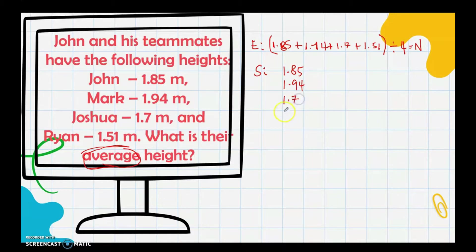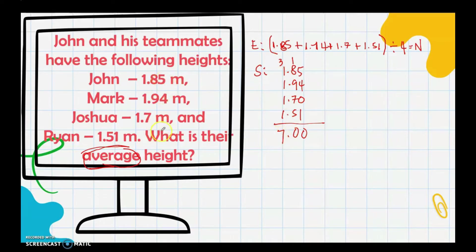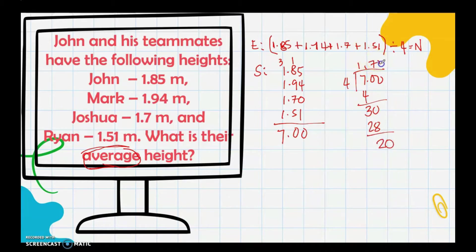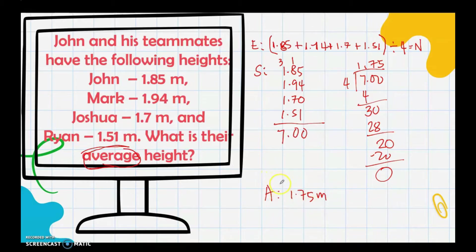Let's add manually: 1.85 + 1.94 + 1.7 + 1.51. Fill in zeros for empty place values. We get: carry 1, then 18, 25, 30 — carry 3, total 7.00. The sum of the four heights is 7.00. Then divide by 4: that gives 1.75. Therefore, the average height of the four persons is 1.75 meters.